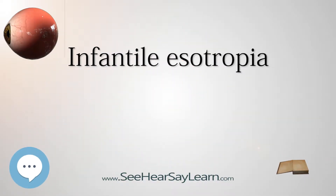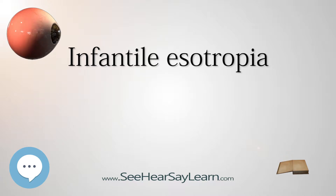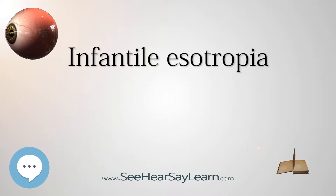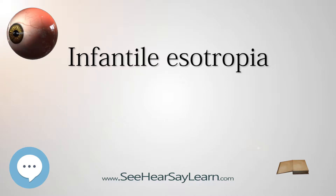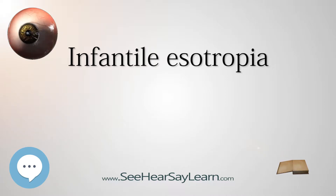Infantile esotropia is an ocular condition of early onset in which one or either eye turns inward. It is a specific subtype of esotropia and has been a subject of much debate amongst ophthalmologists with regard to its naming, diagnostic features, and treatment.